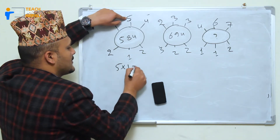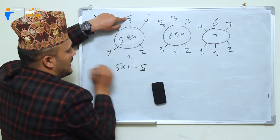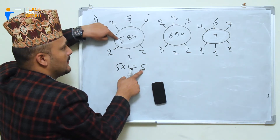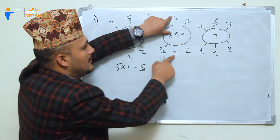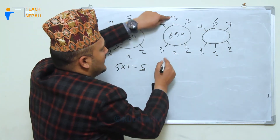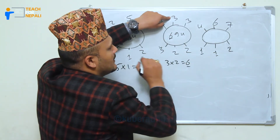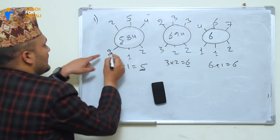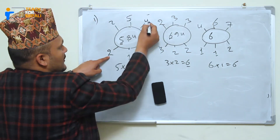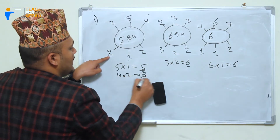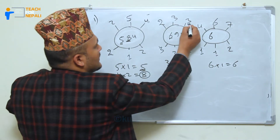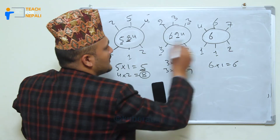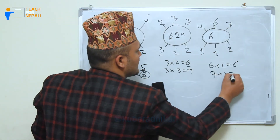5 into 1 equals to 5. 3 into 2 equals to 6. 6 into 1 equals to 6. 6, 6, 8. 8, 8, 2, 3, 3. 3. 7, 1 — 7, 7, 7, 7.